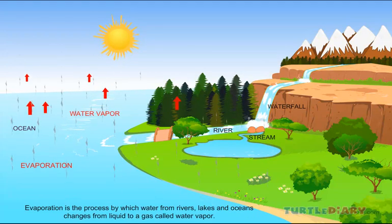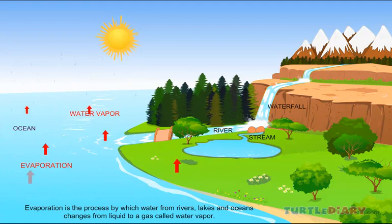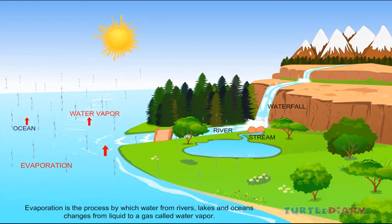Evaporation is the process by which water from rivers, lakes, and oceans changes from liquid to a gas called water vapor.